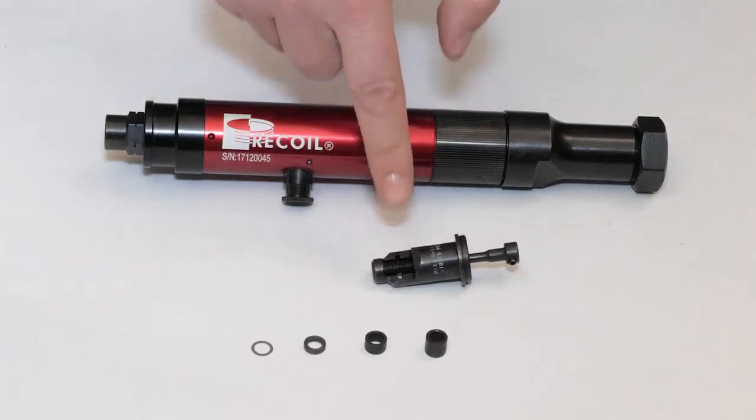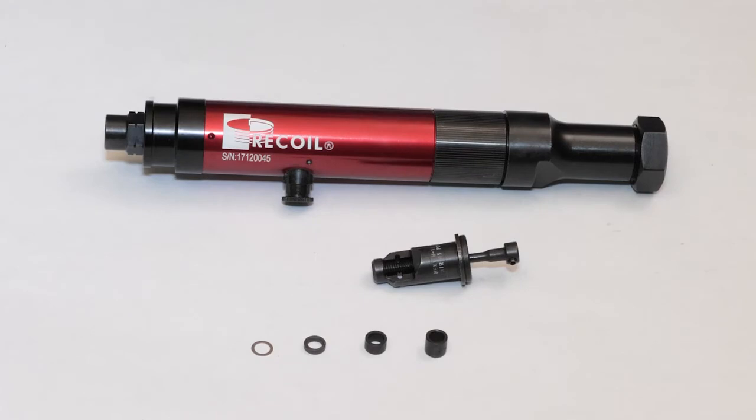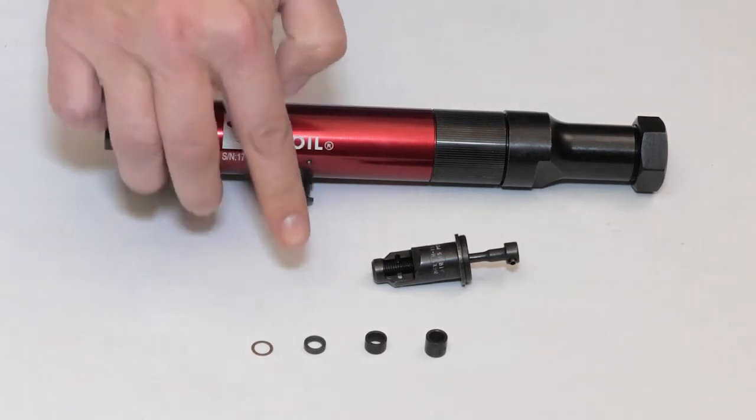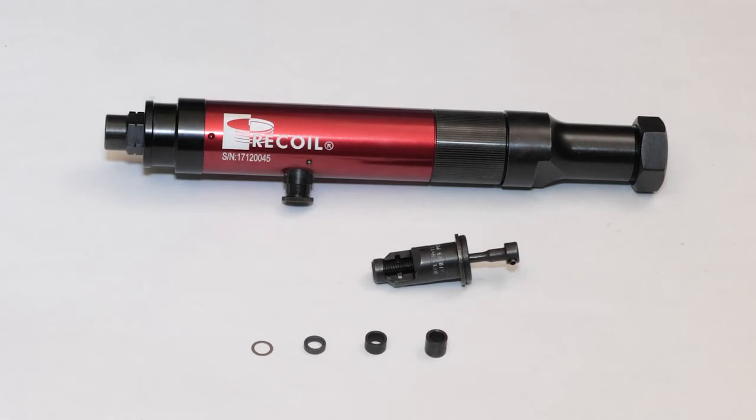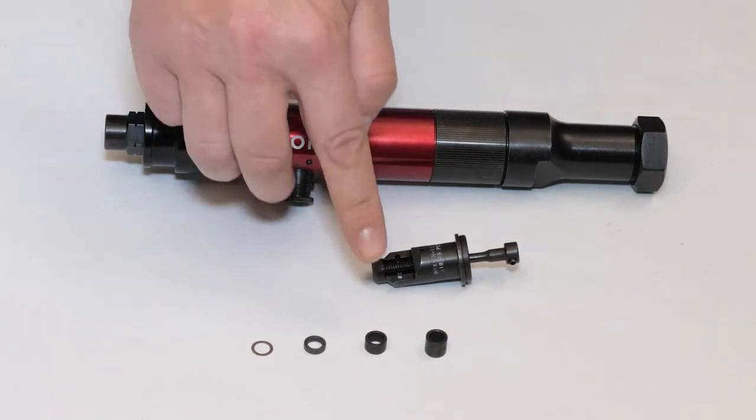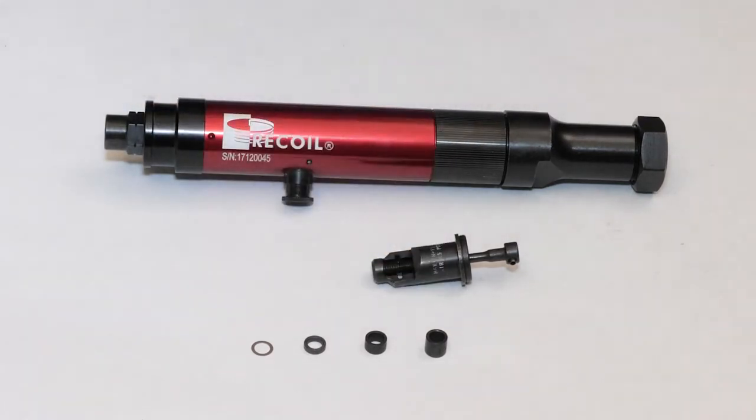The Standard Front End Assembly, the FEA, comes with a shim and three depth spacers: for 1D, for 1.5D, and for 2D. The smallest spacer is for the 2 diameter insert, the medium spacer is for the 1.5 diameter, and the larger spacer is for the 1 diameter insert.